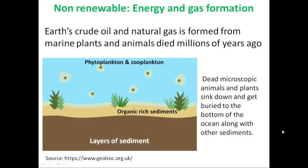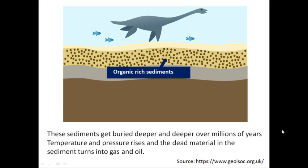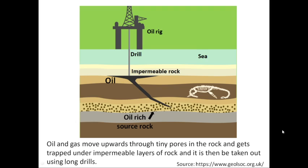Under non-renewable energy resources, the earth's crude oil and natural gas formed from marine plants and animals that died millions of years ago. These dead microscopic animals and plants sank down and got buried at the bottom of the ocean along with sediments such as sand and mud. These sediments got buried deeper and deeper over millions of years. Because of changes in temperature and pressure, the dead material in these sediments turns into gas and oil. The oil and gas then move upwards through tiny pores in the rocks and get trapped under an impermeable layer of rock.